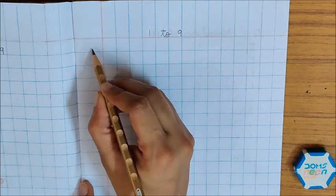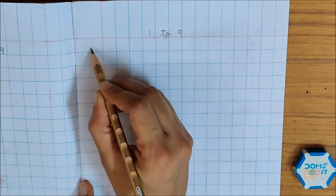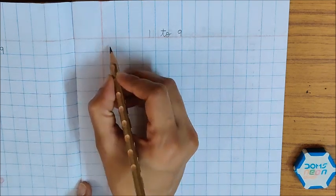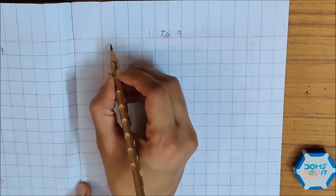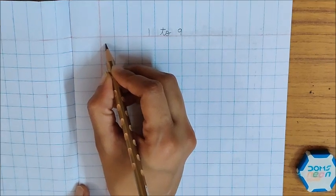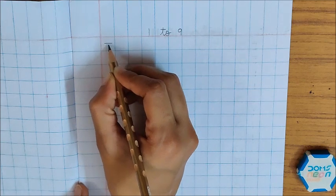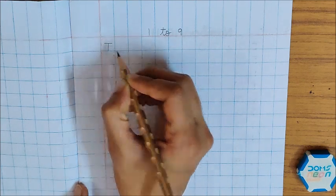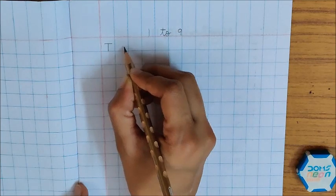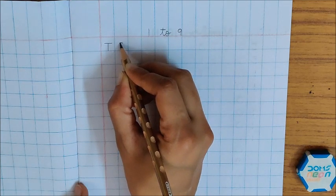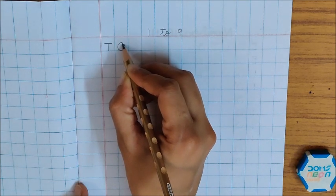And now after writing this heading 1, 2, 9, leave this box in the margin. We will not do writing here. In the first box after the margin, children, you can try this writing yourself. Write here T, then in the next box write O.